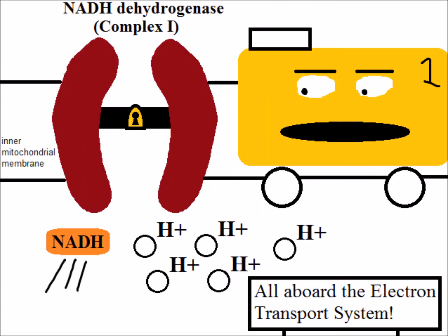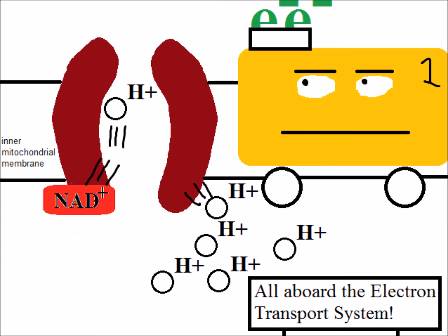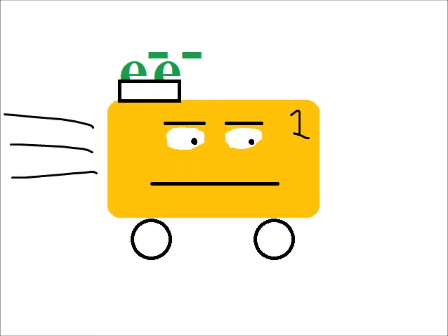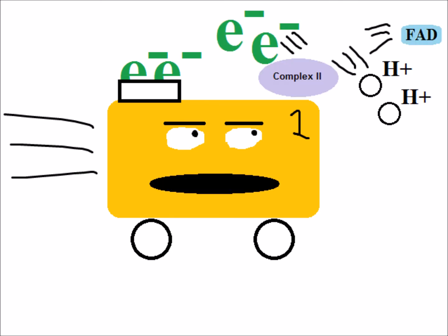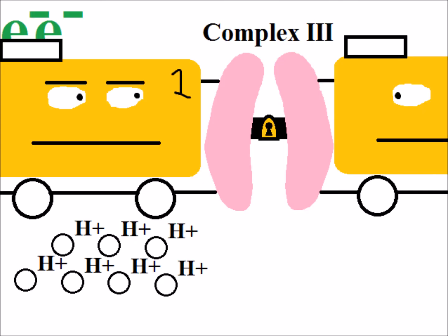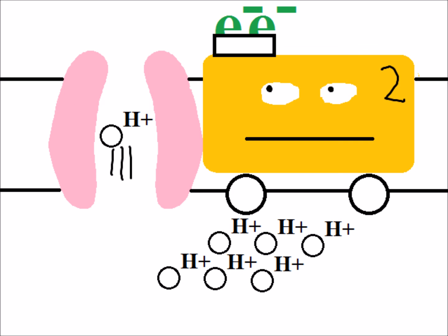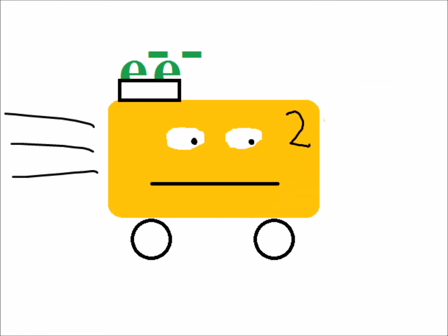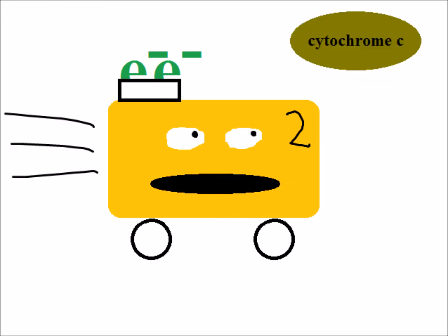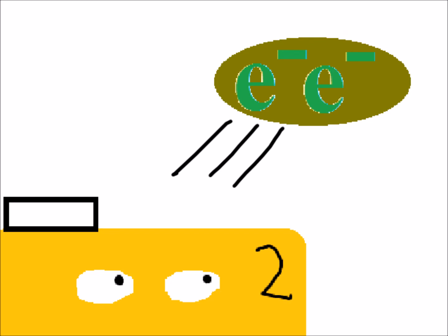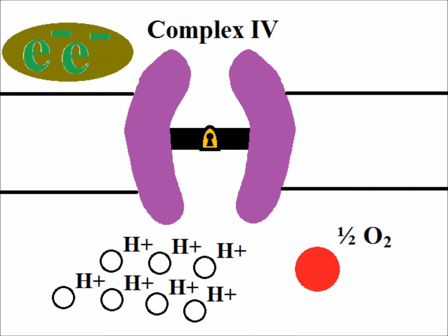All aboard the electron transport system! The first stop is complex 3, where electrons are passed along. Next, hydrogen cations are moved across the membrane. The next stop is cytochrome C, which receives the electrons and passes them along. The final stop is complex 4, where oxygen catches the electrons.